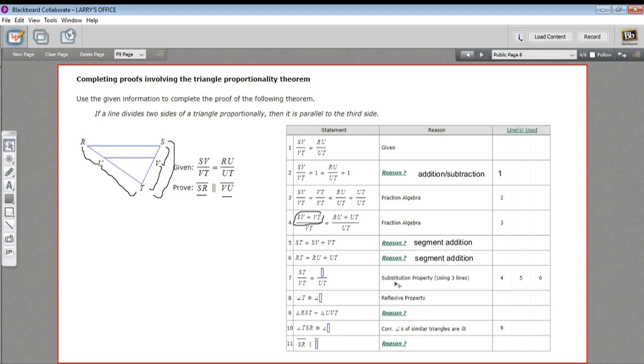Next, they use substitution. And they do something pretty clever here. So they've said that ST is SV plus VT. So in this statement here in number four, we can just substitute in ST. So that's how you get ST over VT. They're going to do the same thing here. They've said that RT is RU plus UT. So in here, we can replace this with RT. So what goes here is RT. And that's using the substitution property.